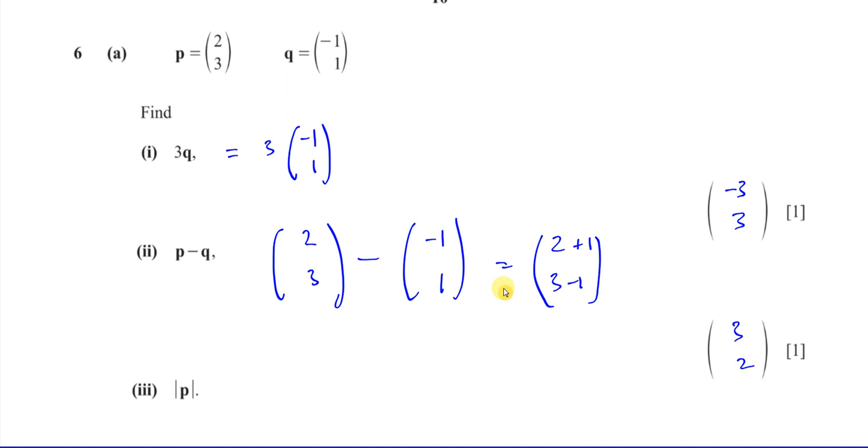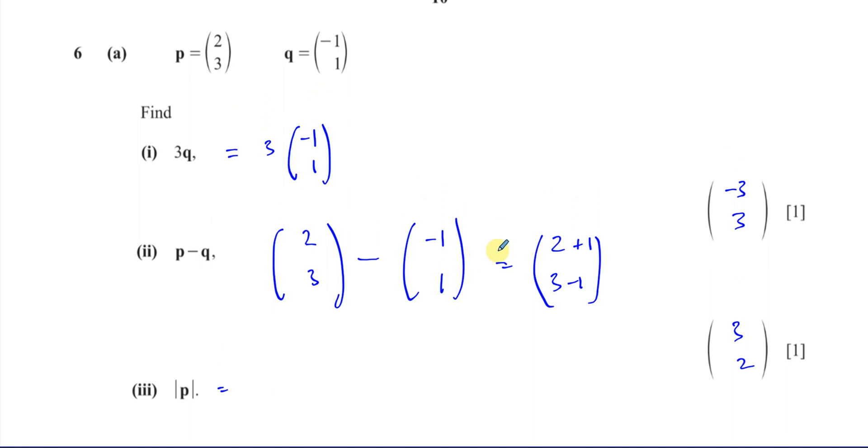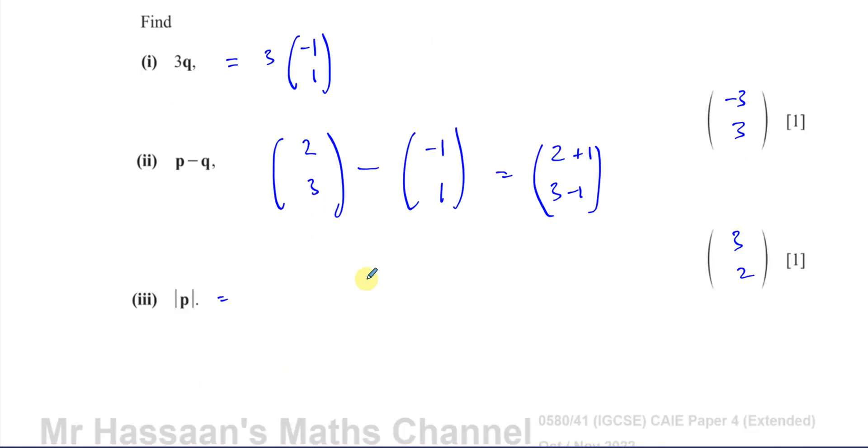Then part 3 says find this. Now what does this mean? It's got these two lines. What it means is basically the magnitude of p. Find how long the vector p is. So we've got to find the magnitude of the vector 2, 3. So basically, if you think about it, the vector 2, 3 would be something like this. If you started from here, for example, and you're going 2, 3, you would go 2 to the right and then 3 up.